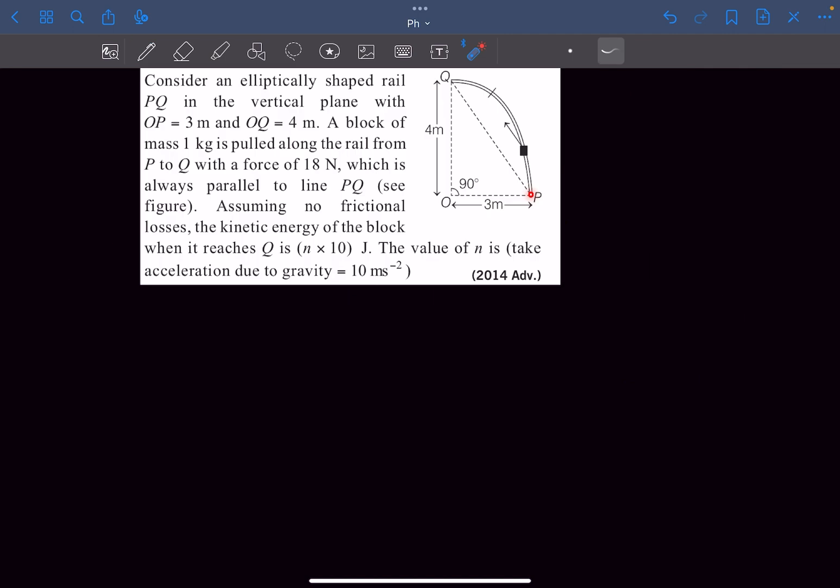Moving on to the next problem, we have an elliptically shaped rail PQ in the vertical plane with OP and a block of mass m is pulled along the rail from point P to point Q always parallel to the elliptical surface. There is no friction in the given problem and we have to find out the kinetic energy of the block when it reaches the point Q.